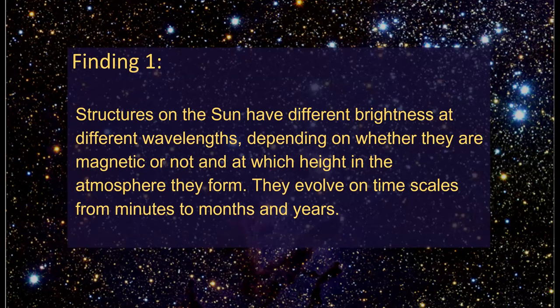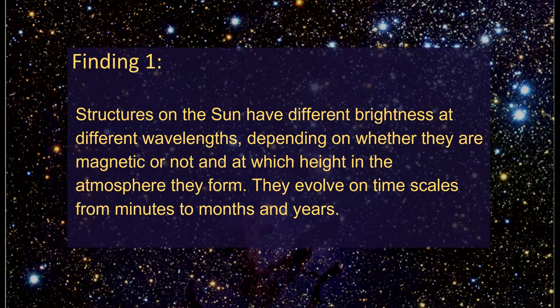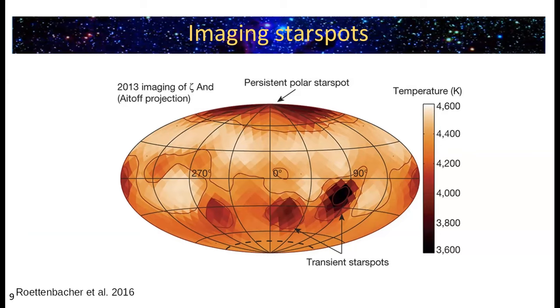The key finding from this part of the presentation is that structures on the sun have different brightness at different wavelengths depending on whether they are magnetic or not, and at which height in the atmosphere they form. They evolve on timescales from minutes to months and years. The sun will be a benchmark for stellar measurements, and we can proceed to stellar structures.